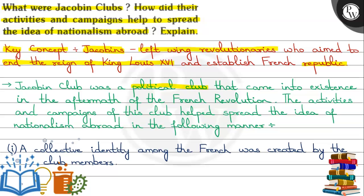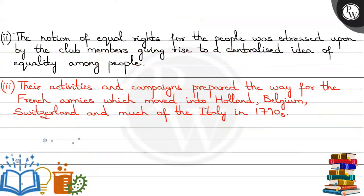First, it promoted a collective identity. Secondly, the Jacobin club members placed a lot of emphasis on equal rights for everyone, which gave rise to the centralized idea of equality among people. Thirdly, their activities and campaigns spread from France into Holland, Belgium, Switzerland, and Italy in the 1790s.